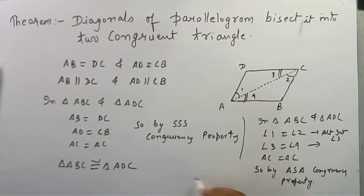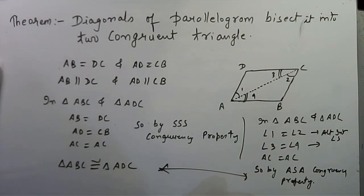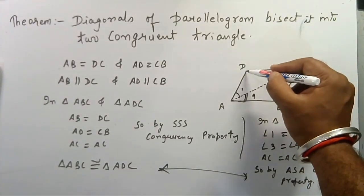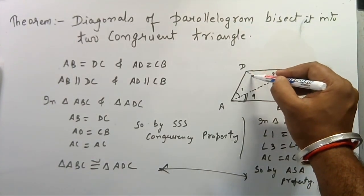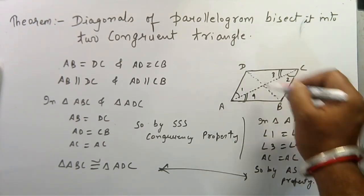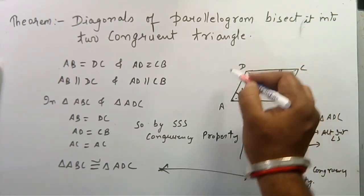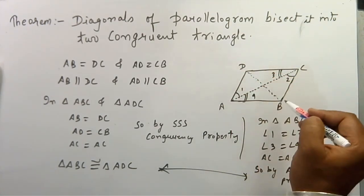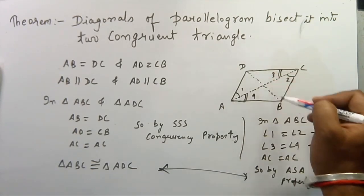these two triangles are congruent. So this was the proof of this theorem. You can also use the same procedure if you consider the other diagonal DB. By the same procedure, you can get the same result that triangle ADB is congruent to triangle DBC.